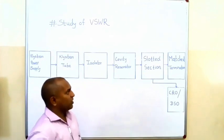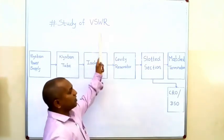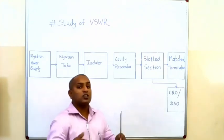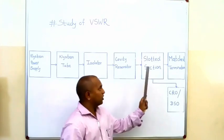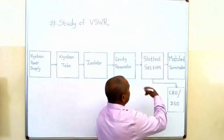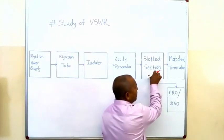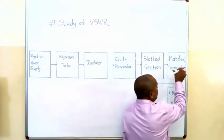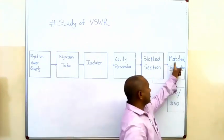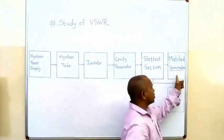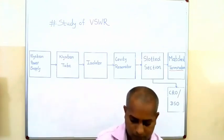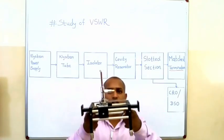Today's experiment is measurement of VSWR using the slotted line section. We will use a slotted line section in this block and use different types of termination — matched termination, open termination, and short termination — across the slotted line section. This is our slotted line section.